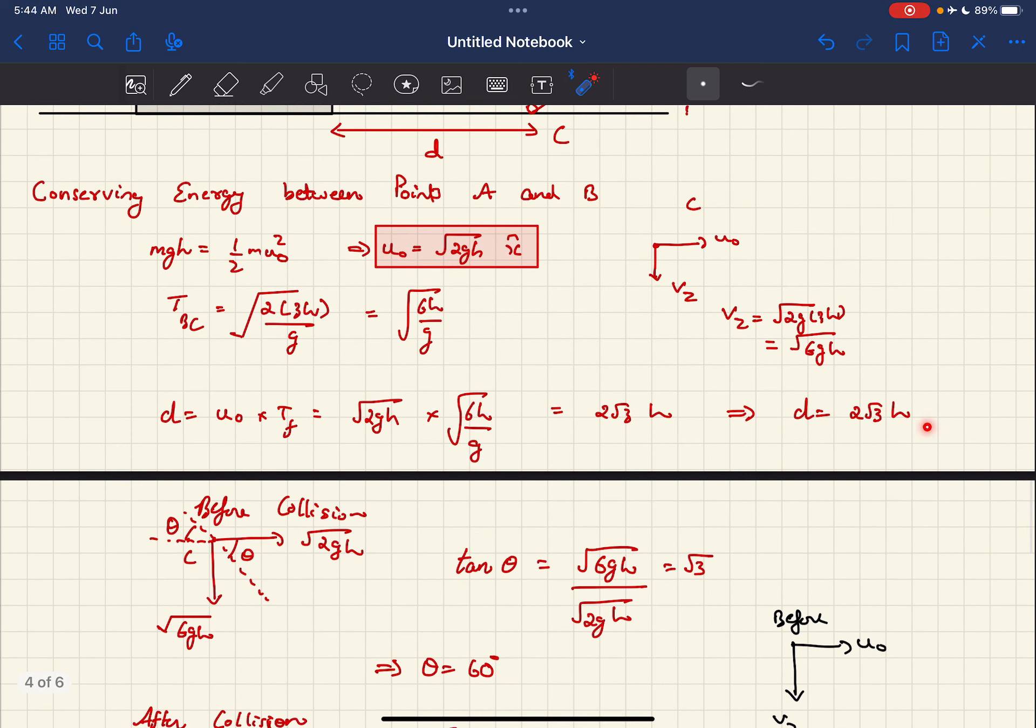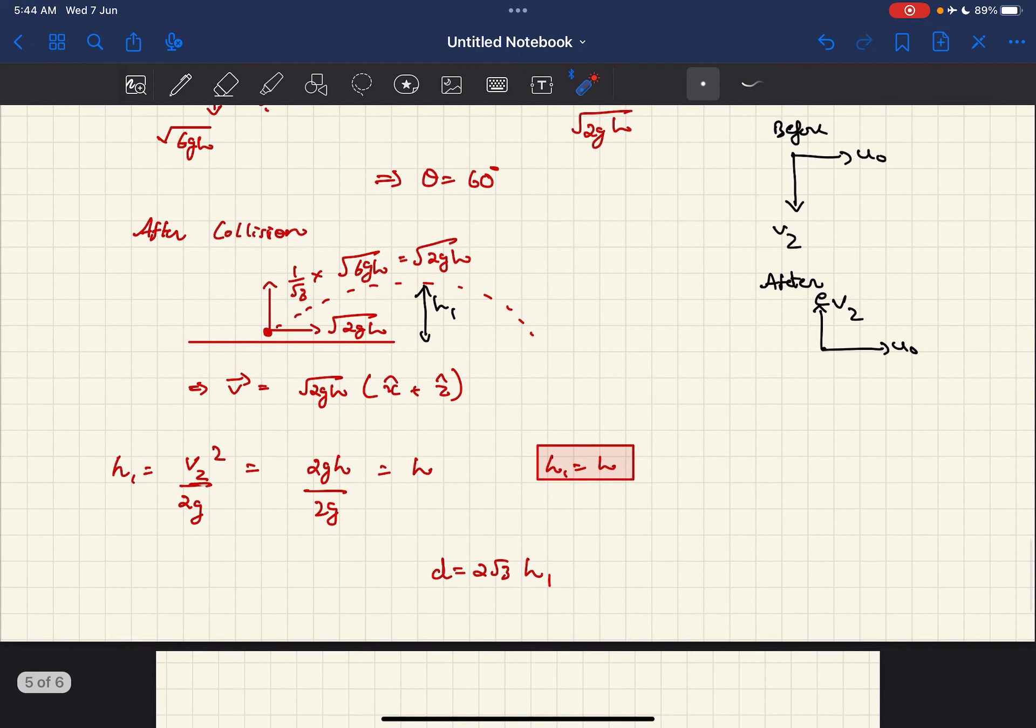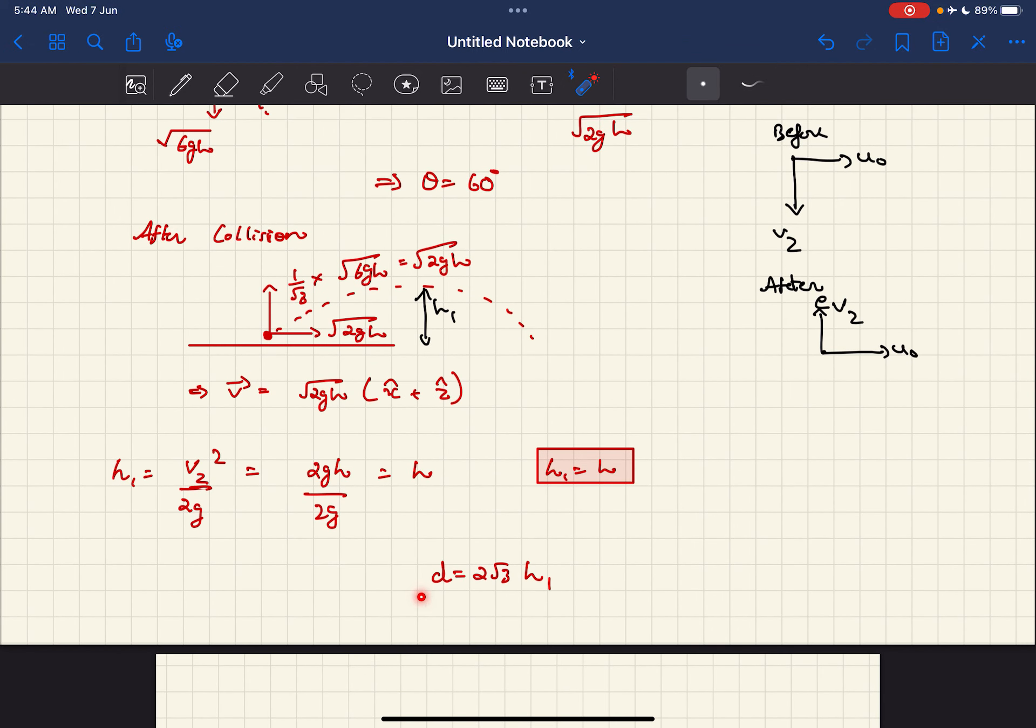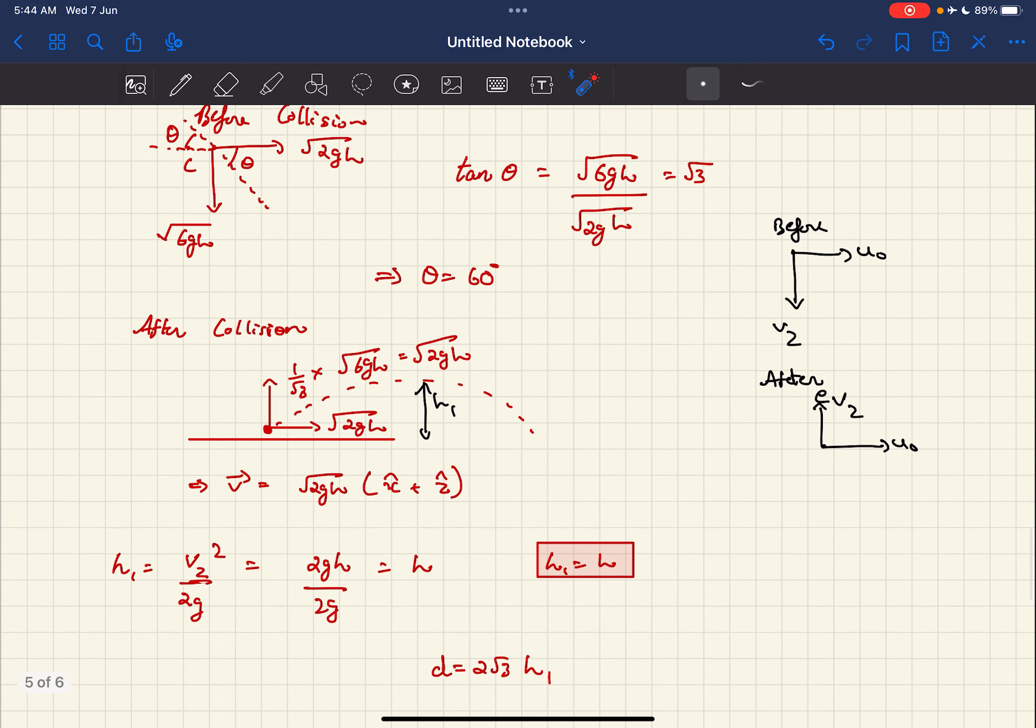Now, we had the relation D as 2√3H. And as H1 is H, we get D equals 2√3H1, which is option D. So that's it, thank you.